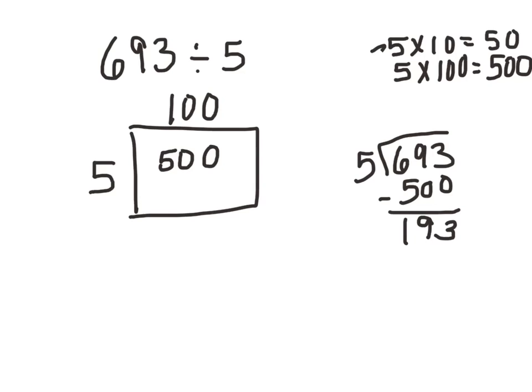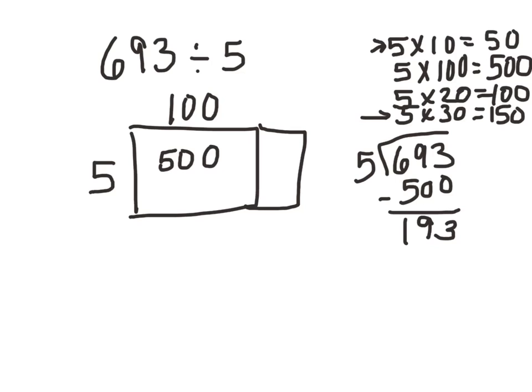Now if I look at this fact right here I see that 5 times 10 is 50 so I know that 5 times 20 would be 100 and 5 times 30 would be 150. So I'm going to use 5 times 30 because it's closest to 190. I'm going to draw my next box so 5 times 30 is worth 150.